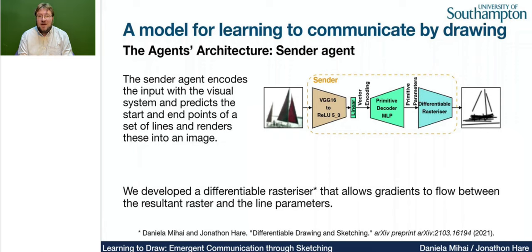Inside the sender agent, its role is to encode the image into a feature vector and then decode it into a sketch. One of the biggest challenges in this work was developing an approach to perform differentiable rasterization of vector primitives, which we discuss in our archive preprint. Internally, the primitive MLP decoder block takes a vector and turns it into a set of instructions telling the rasterizer where the start and end points of each drawn line are.